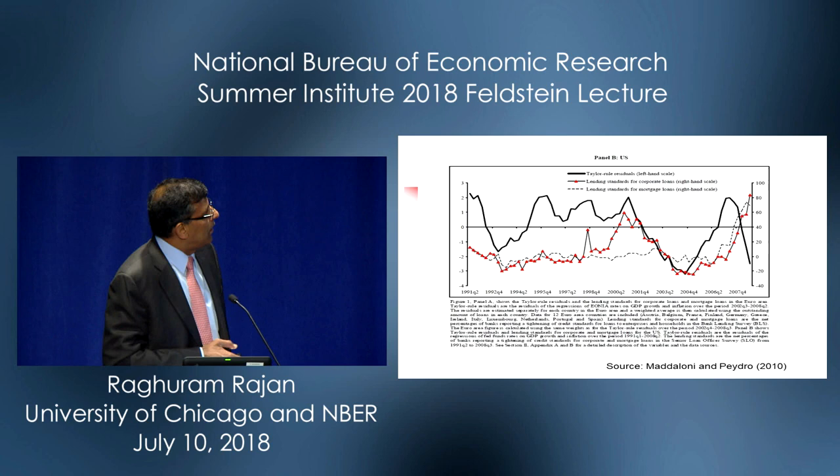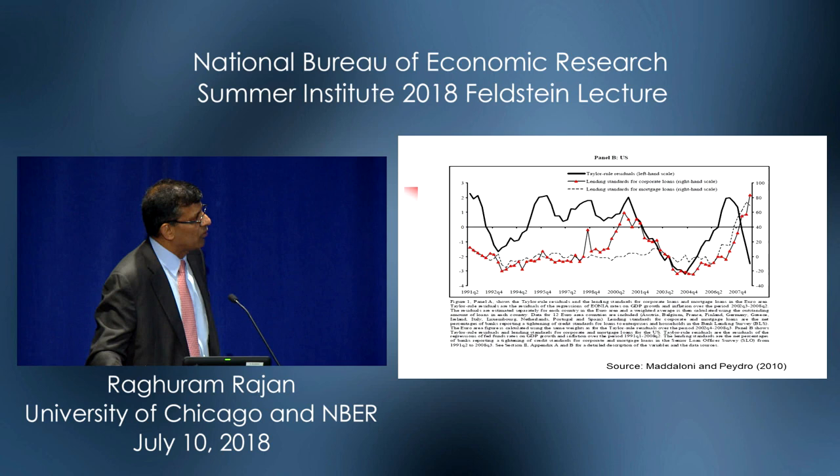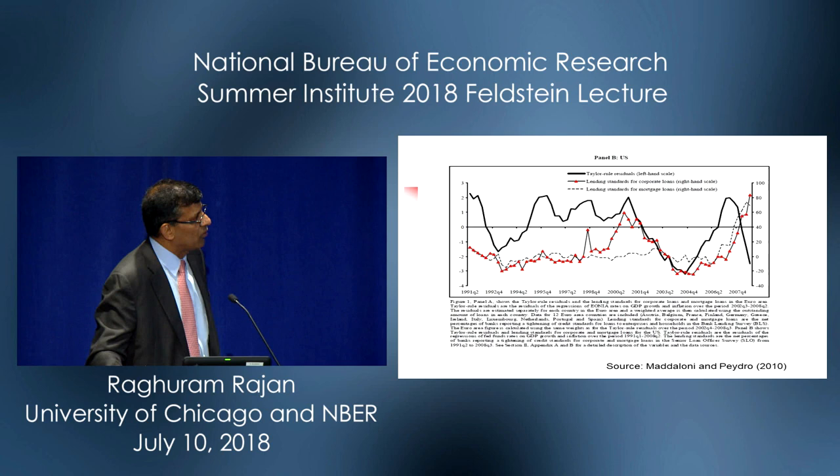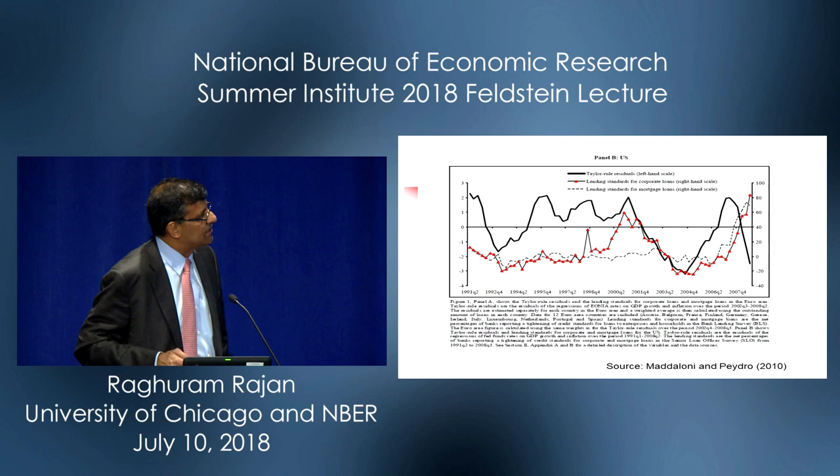Similarly in the US — the time for this graph is a little different, but focus on the right-hand side. If you look at 2001, 2002 onwards, again you see Taylor Rule residuals are negative in the US, suggesting monetary policy was quite easy relative to the past. And you can look at financing conditions — lending standards are easy, tightening before the crisis, and similarly for mortgage loans.